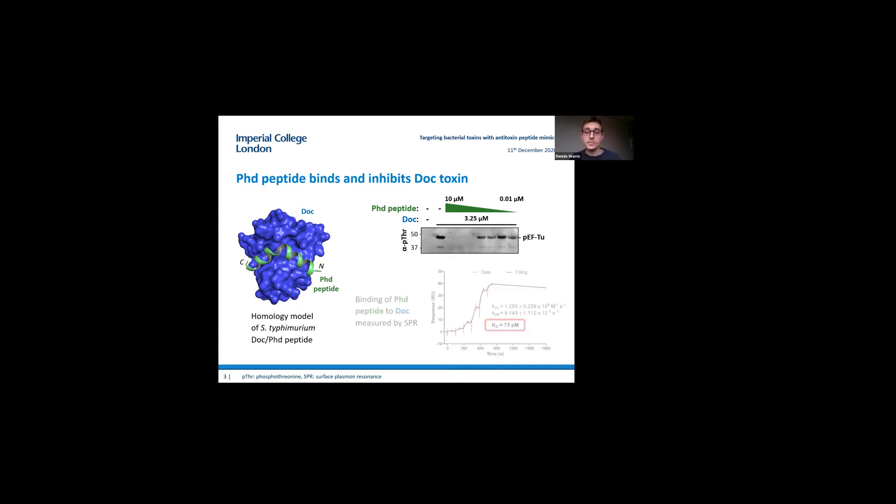We also checked the direct binding between the peptide inhibitor and the Doc toxin by surface plasmon resonance analysis. We found that it's a very tight interaction with a dissociation constant of around 70 picomolar, so it's a very tight complex.